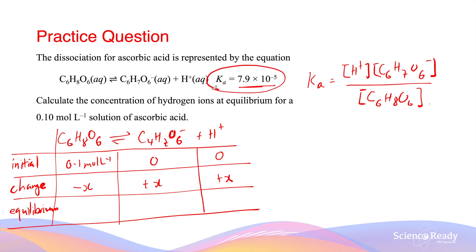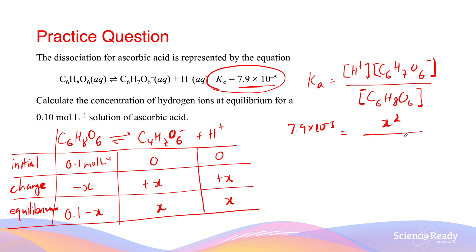This suggests that the reaction favors the reactants. By combining the initial and the change in concentration, the equilibrium concentration of ascorbic acid is 0.1 minus x, while the concentrations of the two ions are both x. We can then substitute these expressions into the Ka constant, which is 7.9 times 10 to the minus 5 — so this equals x squared over 0.1 minus x.